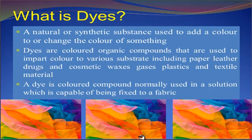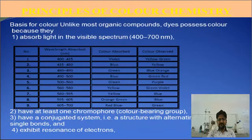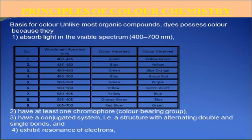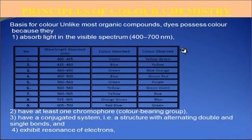Now we discuss about principles of color chemistry. Basic for color: unlike most organic compounds, dyes possess color because they absorb light in the visible spectrum, 400 to 700 nanometers. The first wavelength range is 400 to 435 nanometers — color absorbed is violet, but we observe yellow-green.